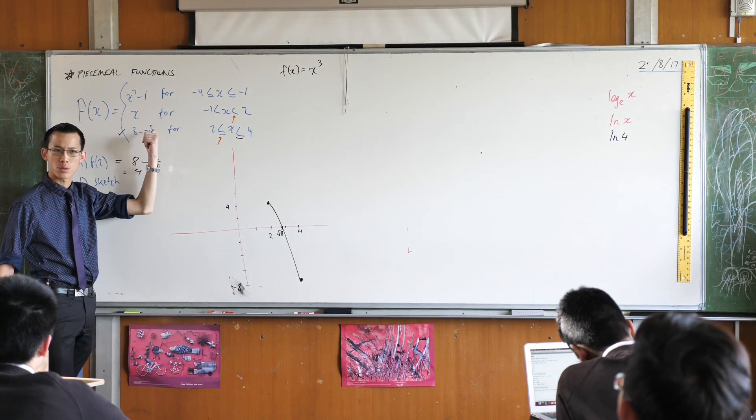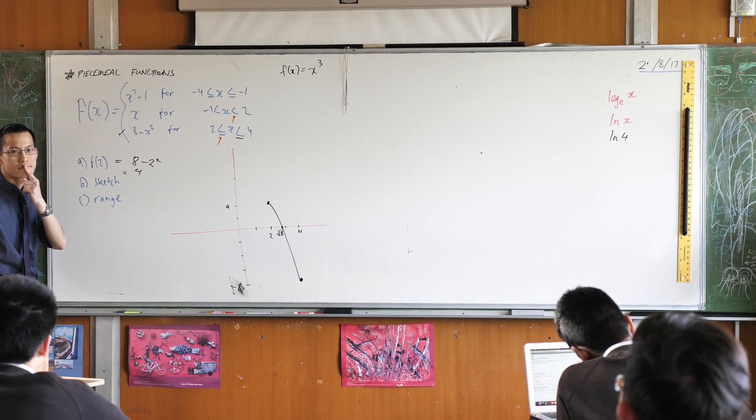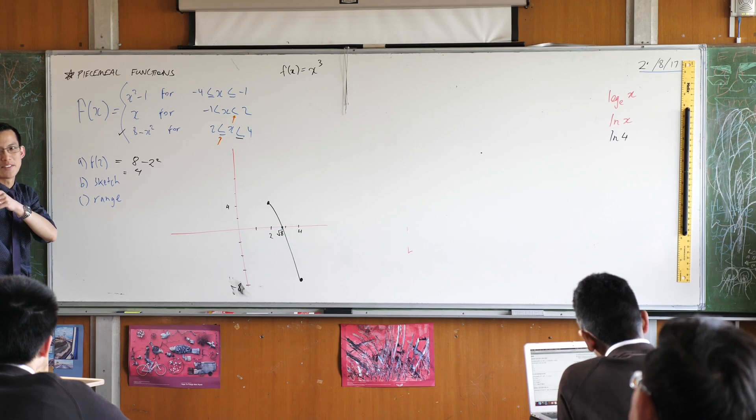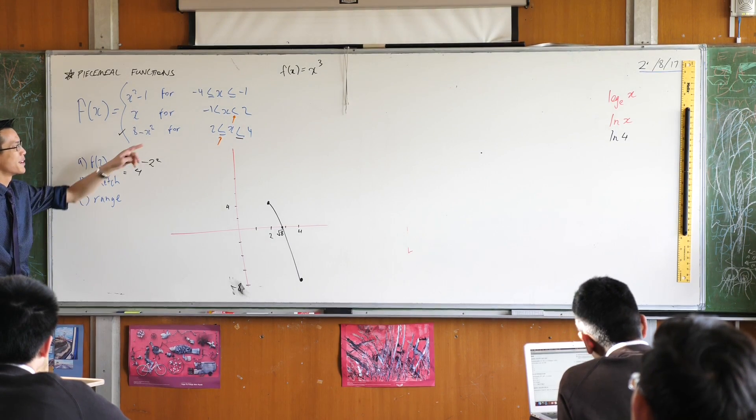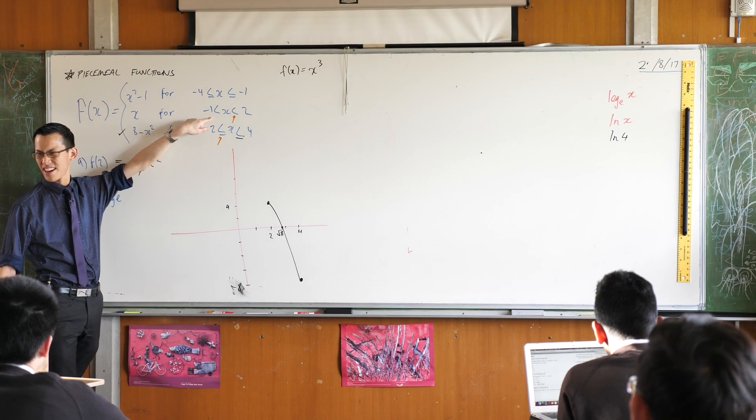So again, just like here, I'm going to think about where I start and where I end. So when x is equal to negative 1, what is the function equal to? What is f of negative 1? So this is a bit of a trick question, isn't it? Because when f is equal to negative 1, I'm actually not even in this domain. Do you see that? I'm in this one.